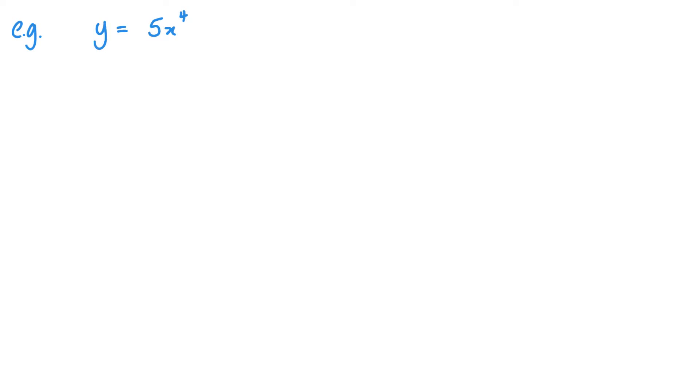So, what we're going to do here is just differentiate this twice. And it's very straightforward. So, we differentiate once. So, I need to multiply by 4. That gives me 20x, and I take 1 away from the power. So, it becomes 3.